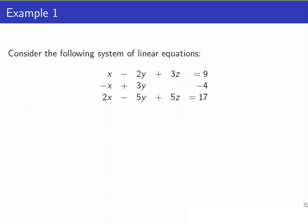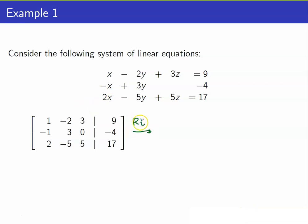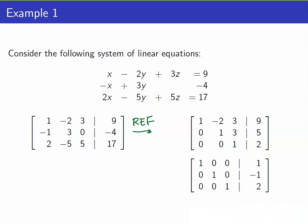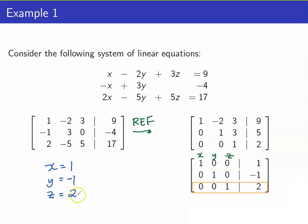Let us consider the following system of linear equations and its augmented matrix. Suppose we transform it to its REF and then reduce it further to its RREF. We get a matrix where the columns correspond to x, y, and z. Hence, we have the solution: x is equal to 1, y is equal to negative 1, and z is equal to 2. This system has exactly one solution.